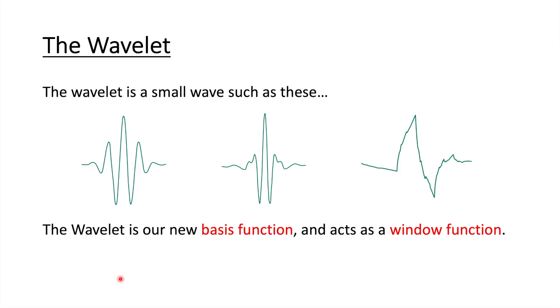So what is the wavelet? A wavelet is a small wave, such as these ones, and the wavelet is now our new basis function. Remember from the Fourier transform, the basis function was our sines and cosines. But now for a wavelet transform, we use a wavelet, and the wavelet acts as our window function.